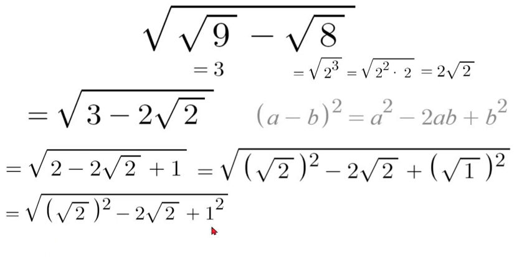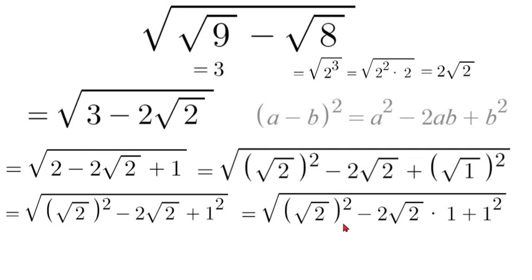So now if you notice, we are almost there. We have an a value correct, which is square root of 2, and the a value is also here square root of 2, and we have a b value which is 1. The only thing we're missing is the b value in this middle expression. We have a 2 and an a, and we need a b, and since b is 1, all we need to do is multiply the middle by 1. So it'll be square root of square root of 2 squared minus 2 square root of 2 times 1 plus 1 squared.